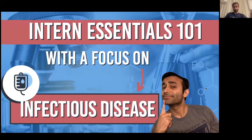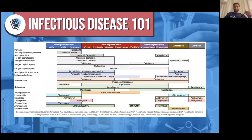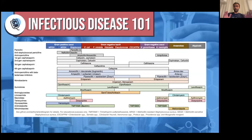Most of the information today is going to revolve around this chart. If you want to get this chart, just type in Wikipedia and then type in antibiogram, and this will pop up. This is going to get you through most of intern year, even if you don't memorize it. It tells you what organisms are here on the x-axis at the top — you can see atypicals, anaerobes, gram negatives, gram negative bacilli, and then gram positives. It tells you the most common antibiotics we use in the hospital and whether or not they cover a particular organism.